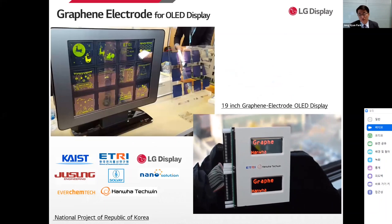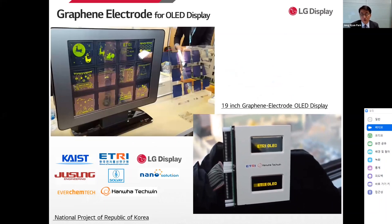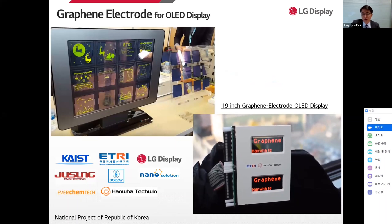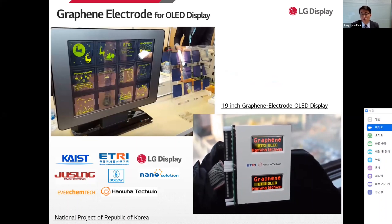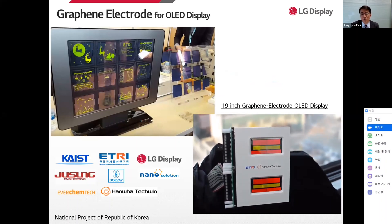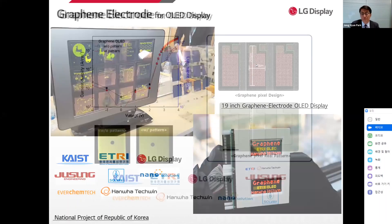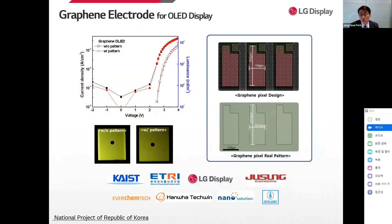Let's change the subject to graphene electrode for OLED display. This slide shows a 19-inch OLED display with graphene anode electrode. We've demonstrated the applicability of graphene to OLED anode electrode through the National Project of the Republic of Korea, in collaboration with several companies including ETRI. This slide also shows the graphene pixel rear pattern using photolithography and electrical property of the 19-inch OLED display with CVD graphene anode electrode.